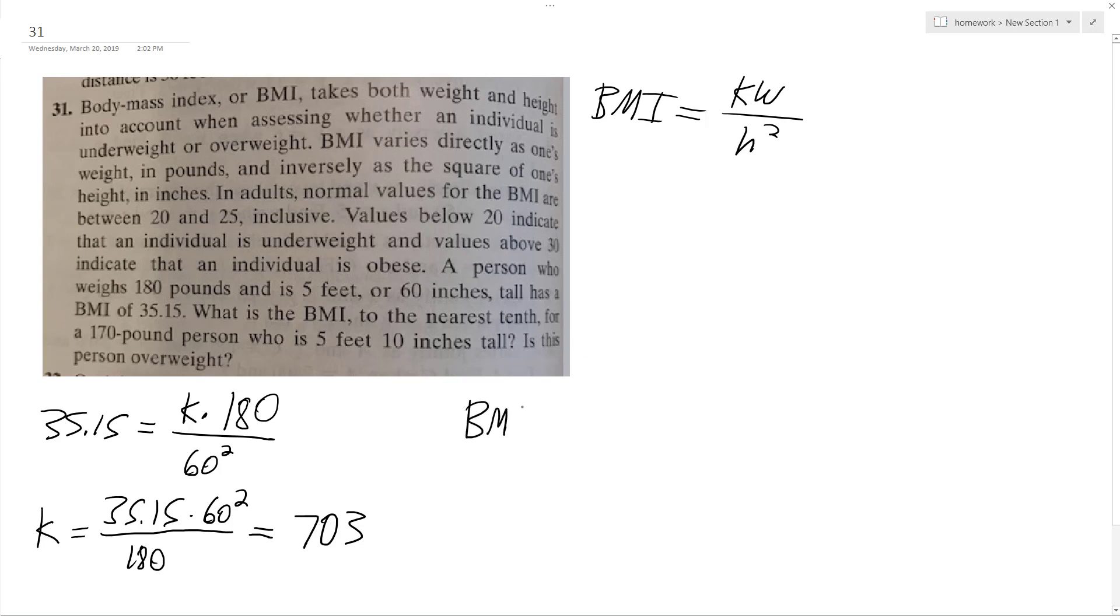So in this instance, our BMI is going to be equal to 703, I'm using that for K, times 170 pounds, and then 70 inches tall, 70 squared. So if I solve for this, what I end up with is a BMI equal to 24.38.